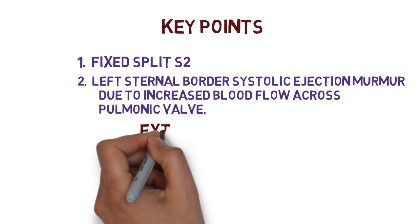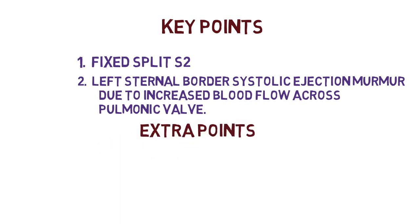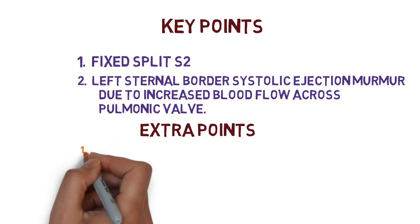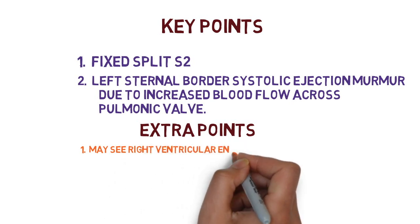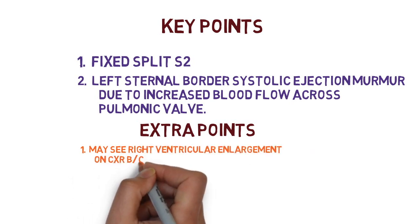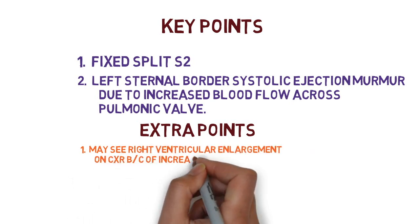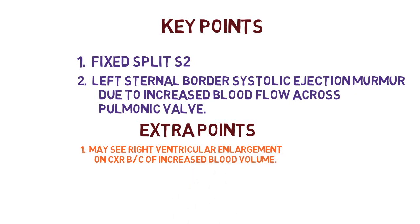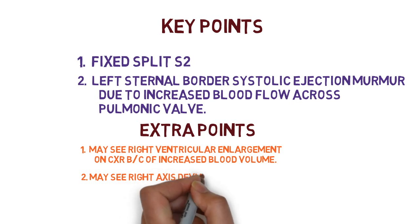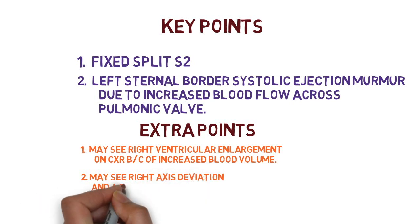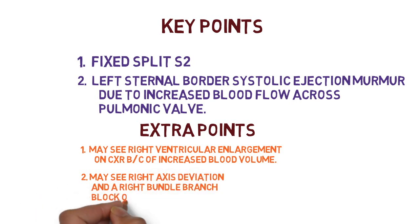Some extra points: number one, we may see right ventricular enlargement on chest X-ray because of the increased blood volume. Number two, we may see right axis deviation and a right bundle branch block on EKG.